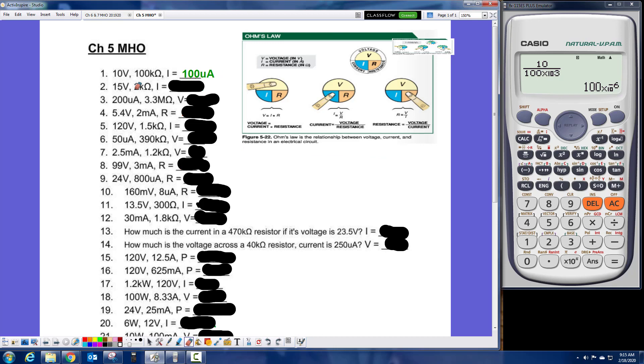Alright, in the next one, we're looking for current again. So again, it's going to be I is equal to V over R. So I got 15 volts over 2 times 10 to the third. And this gives me 7.5 milliamps.